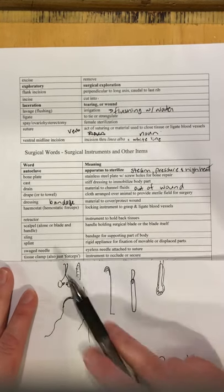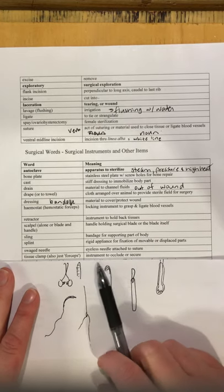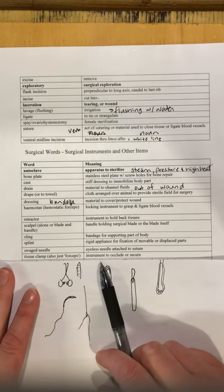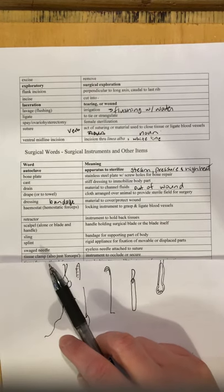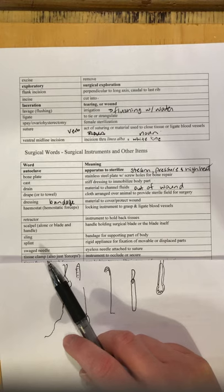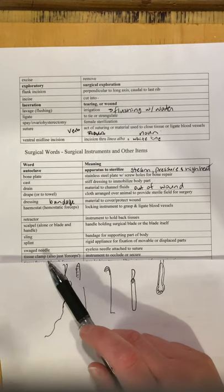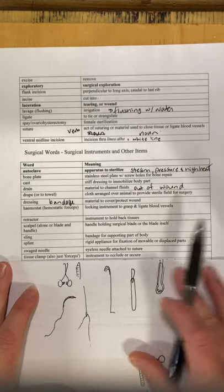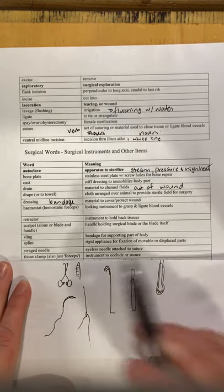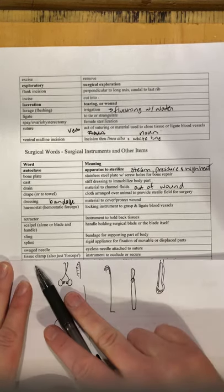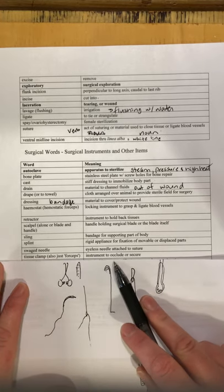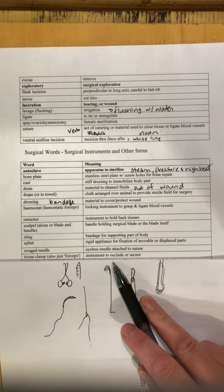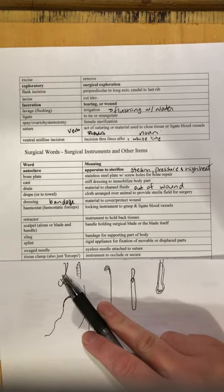A tissue clamp is an instrument used to occlude or secure tissue. These look a lot like hemostats but are larger.